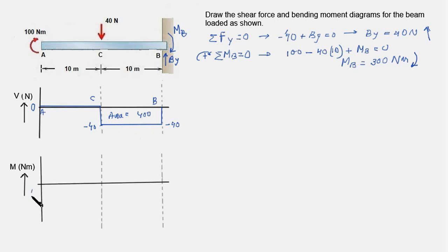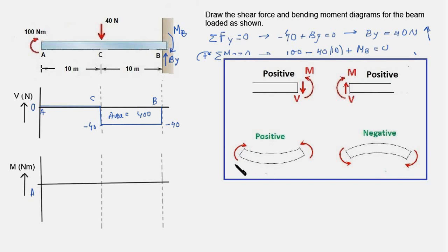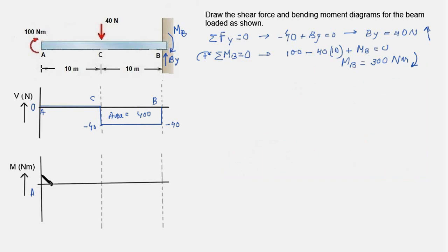For the bending moment diagram, to the left of point A, the bending moment is 0. Moving right to point A, we encounter a 100 Nm clockwise moment. Clockwise moments are considered positive as they create sagging in the beam, so the 100 Nm moment is positive, and we make a positive jump to 100 Nm in the bending moment curve.